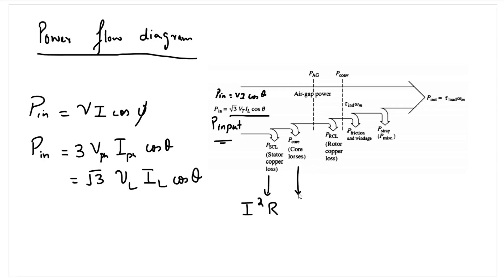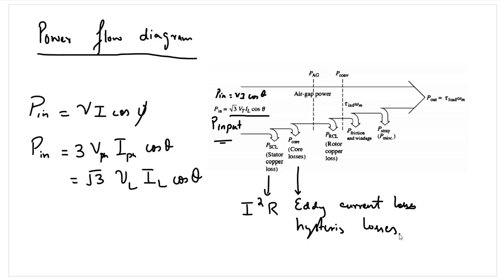The next loss in the induction motor is associated with the core of the circuitry. The core has its own resistance R_C, as derived in the equivalent circuit model. The current flowing through the core — the magnetizing current — is associated with its own losses. These core losses are actually the eddy current losses and the hysteresis losses. Together, the eddy current losses and the hysteresis losses form the iron losses, also known as the core losses of the machine.